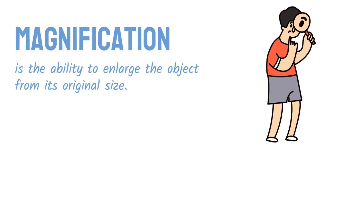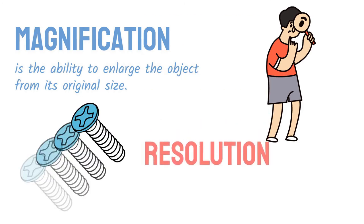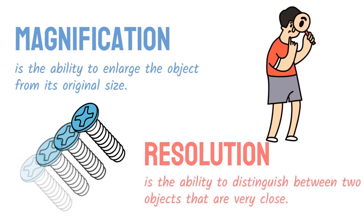Magnification is the ability to enlarge an object from its original size. Resolution is the ability to distinguish between two objects that are very close. Higher the resolution, greater the detail.